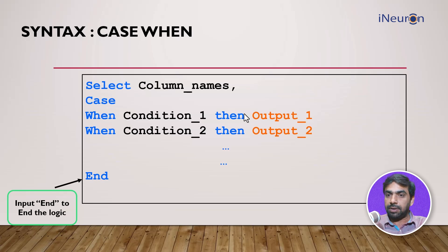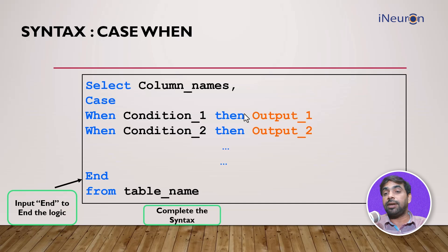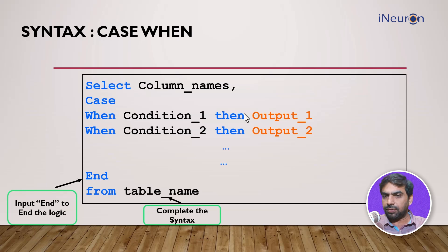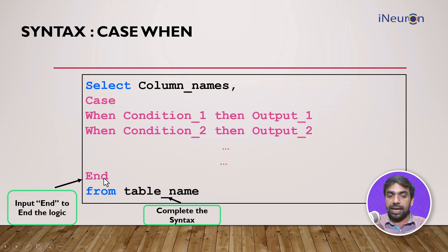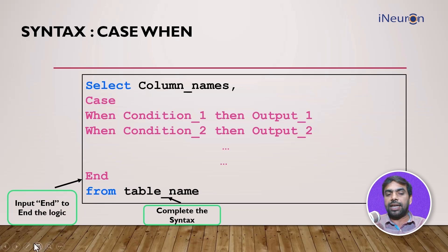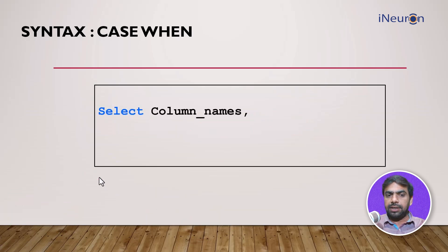After the END, you complete the syntax with FROM and the table name. Apart from the columns you already selected — first name, last name, email, phone number — the CASE...END block is actually another column being created. We haven't given this column a name yet; we'll cover that in the next video. But this CASE...END block becomes the fourth column in your result set.